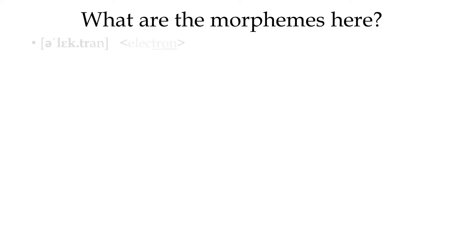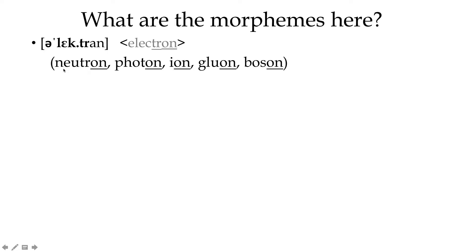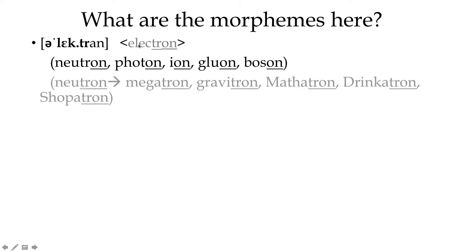So what are the morphemes in the word 'electron'? We can see there's an 'electro' part, and there is a morpheme '-on' in English which seems to mean particle — like neutron, photon, ion, gluon, boson. So maybe it's 'electro' plus '-on' meaning particle. There's also a morpheme '-tron' that we see in English sometimes meaning a machine — like megatron, gravitron, or even a mathatron or drinkatron. So maybe 'electron' is made of some morpheme 'elec' plus '-tron.'